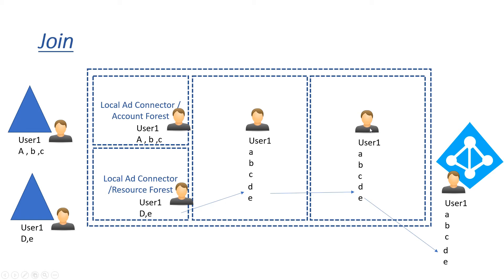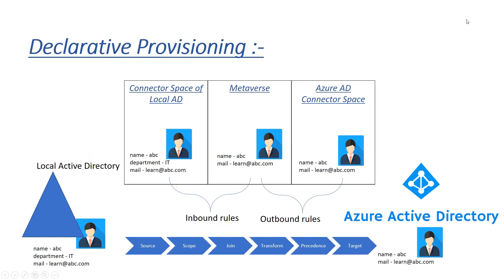The next one is transform. Let's say you already have an attribute on-prem which says department, and I'm going to add a transformation on that attribute — I'm going to query the department attribute but I'm not going to sync it as its own name. What I mean is that the value of the department attribute is something I'm syncing into extension attribute one. This is the transformation which is checked once all the join conditions are completed.